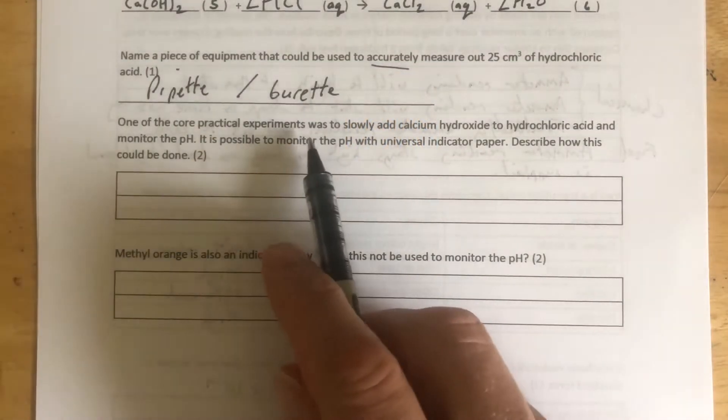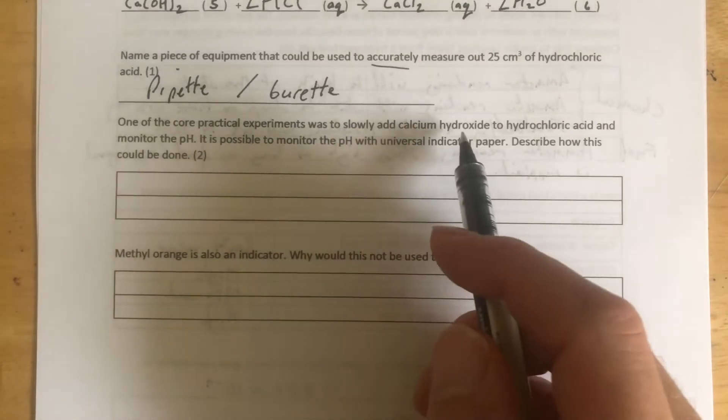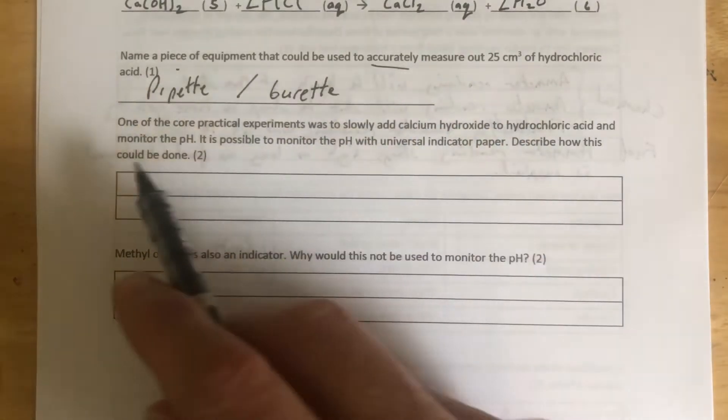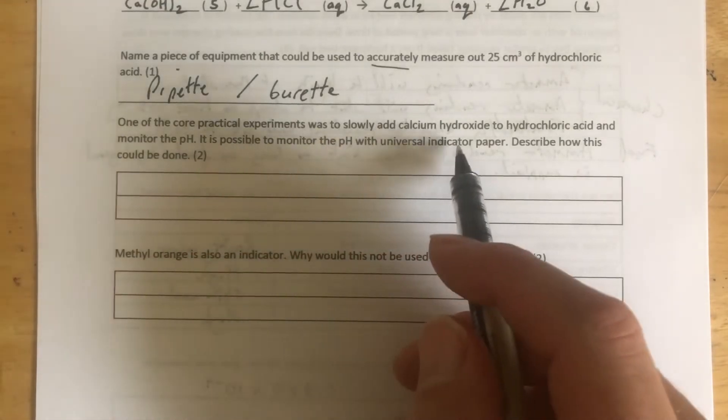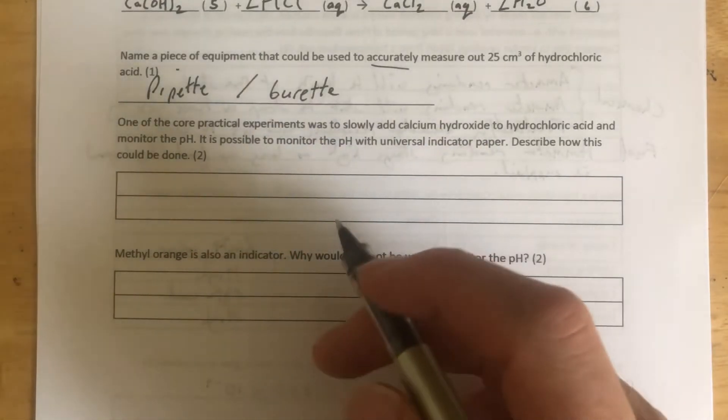One of the core practical experiments was to slowly add calcium hydroxide to hydrochloric acid and monitor the pH. It's possible to monitor the pH with universal indicator paper. Describe how this could be done.